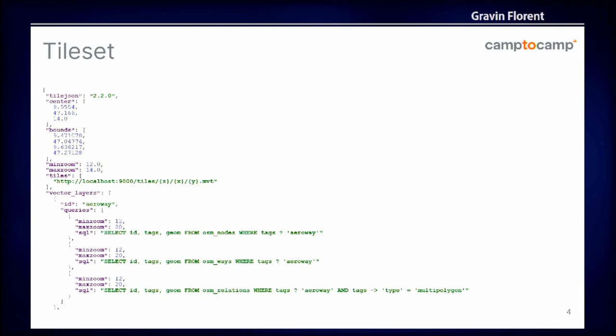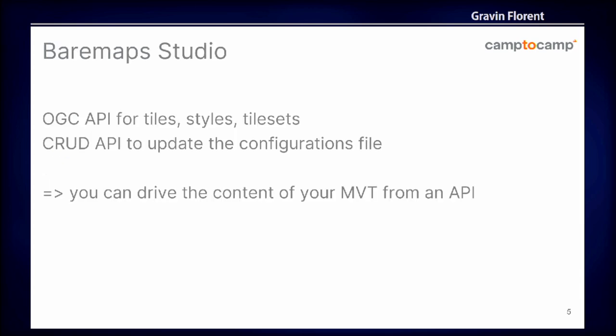One thing is the tile set definition — it's the way BearMaps defines the content of the vector tiles. For each layer, you have different queries depending on zoom level, and these are directly SQL queries. In the end, it aggregates all these queries, parallelizes them, and gives the content of the vector tiles. We wanted to leverage the power of PostGIS to construct and define complex content within our vector tiles. On top of that, we added a module called the Studio with an OGC API compliant for tiles, styles, and tile sets.